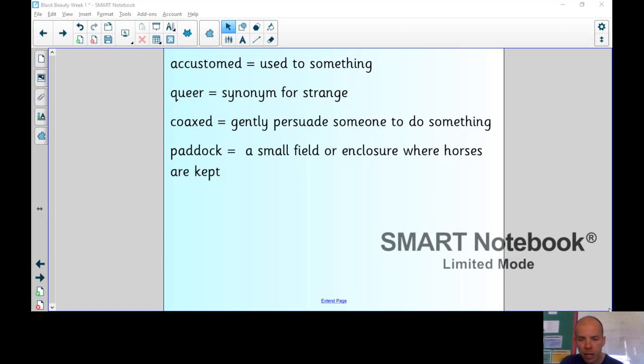She told me the better I behaved, the better I should be treated, and that it was wisest always to do my best to please my master. But, she said, there are a great many kinds of men. There are good, thoughtful men like our master, that any horse may be proud to serve, and there are bad, cruel men who never ought to have a horse or dog to call their own. Besides, there are a great many foolish men, vain, ignorant, and careless, who never trouble themselves to think. These spoil more horses than all, just for want of sense. They don't mean it, but they do it for all that. I hope you will fall into good hands, but a horse never knows who may buy him, or who may drive him. It is all a chance for us, but still I say, do your best wherever it is, and keep up your good name.